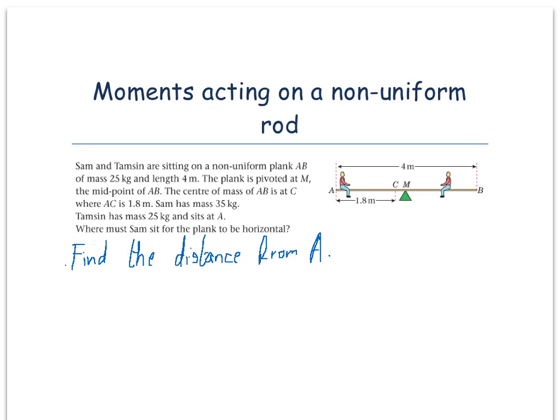The center of mass of AB is at C where AC is 1.8 m. Sam has mass of 35 kg.